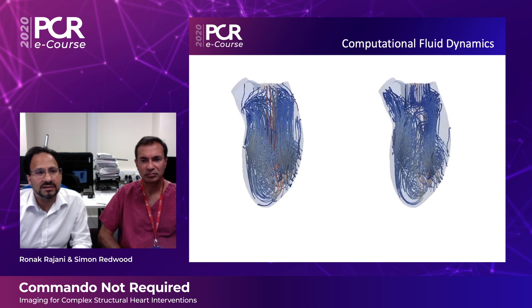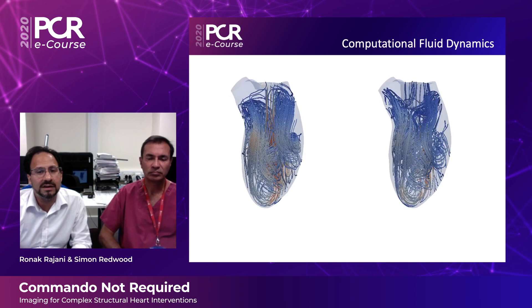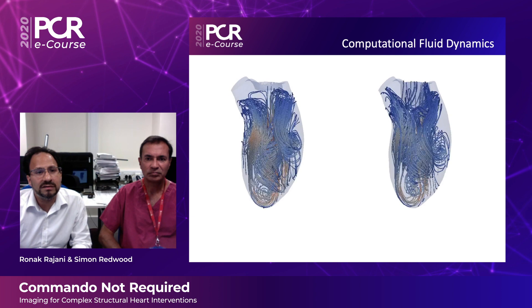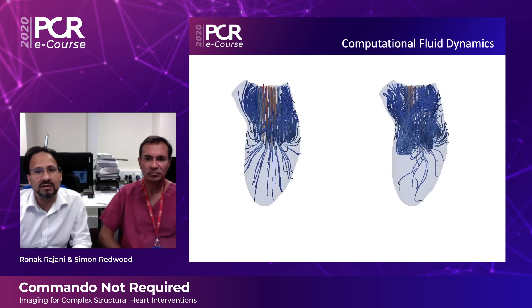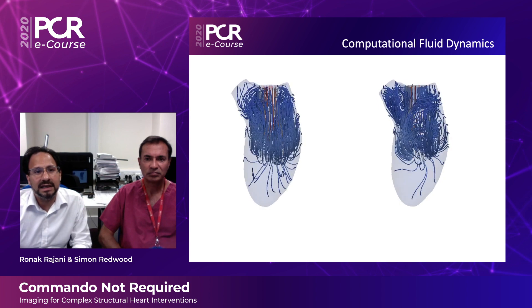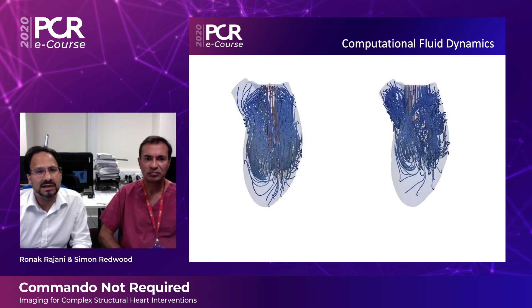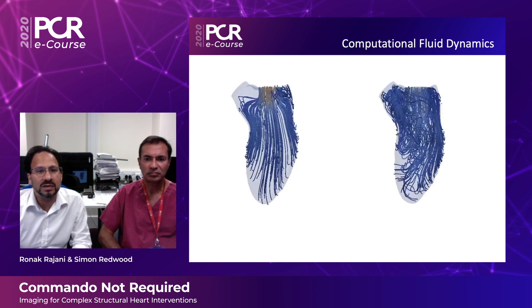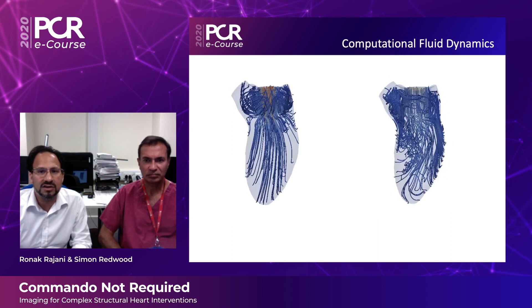On the right of your screen we've virtually implanted the 29mm Sapien III valve onto this mesh, from which we can derive the pressure, flow, and velocity within the neo-left ventricular outflow tract once the valve is deployed. In this particular case we were able to demonstrate that there was unlikely to be any significant LVOT obstruction with a 29mm Sapien III valve in the mitral annular calcification position.